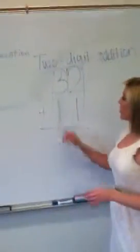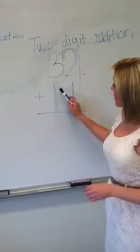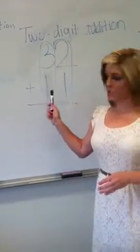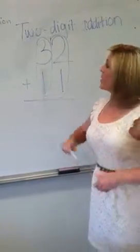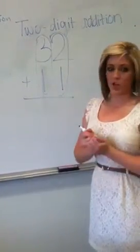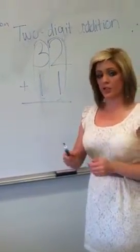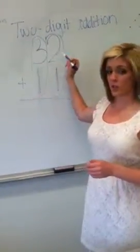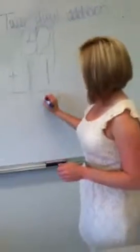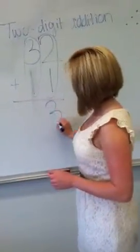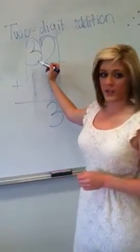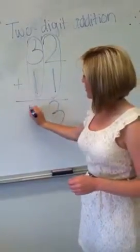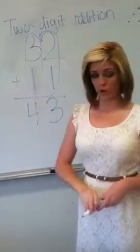If we were to do it on the board, a lot of kids start with 3 plus 1. But it's usually better to start in the ones place because when they have to learn to carry they will start in the ones and move to the tens place. So we're going to start with 2 plus 1 which is 3 and then go on to the tens place which is 3 plus 1 which is 4 for 43.